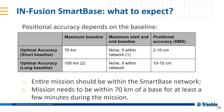What can we expect from SmartBase? For short baseline within 70 km, positional accuracy is about 2–10 cm. For long baseline within 100 km, about 10–15 cm. The entire mission should be within the SmartBase network. For short baseline, the rover should not extend further than 70 km from the nearest base and should remain within the SmartBase network throughout the whole mission. For long baseline, the rover should not extend further than 100 km from the nearest base.